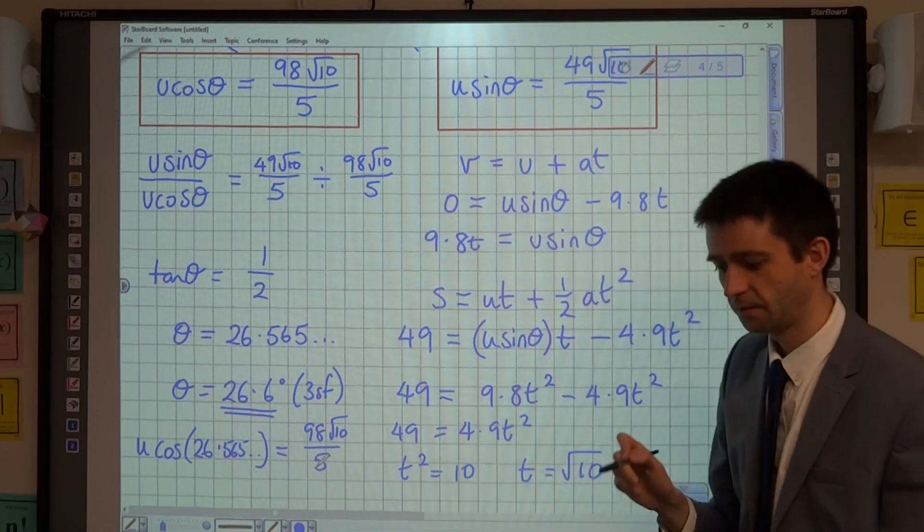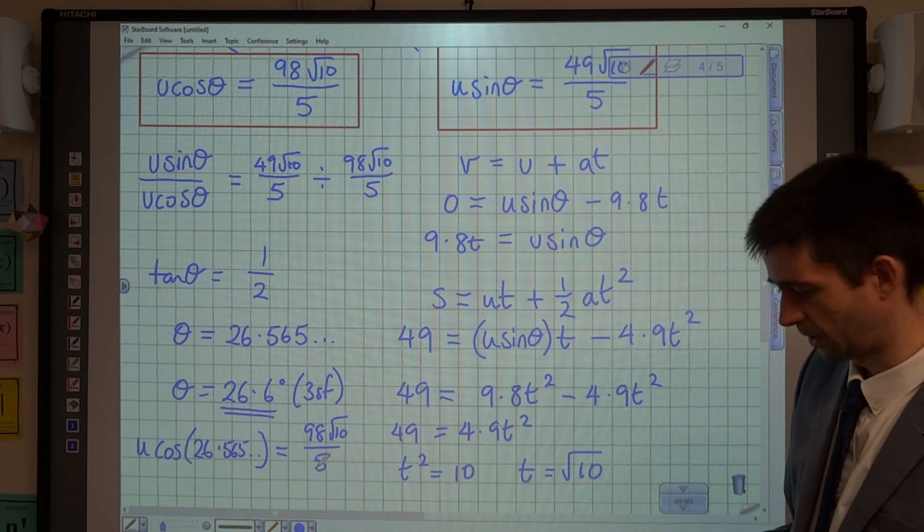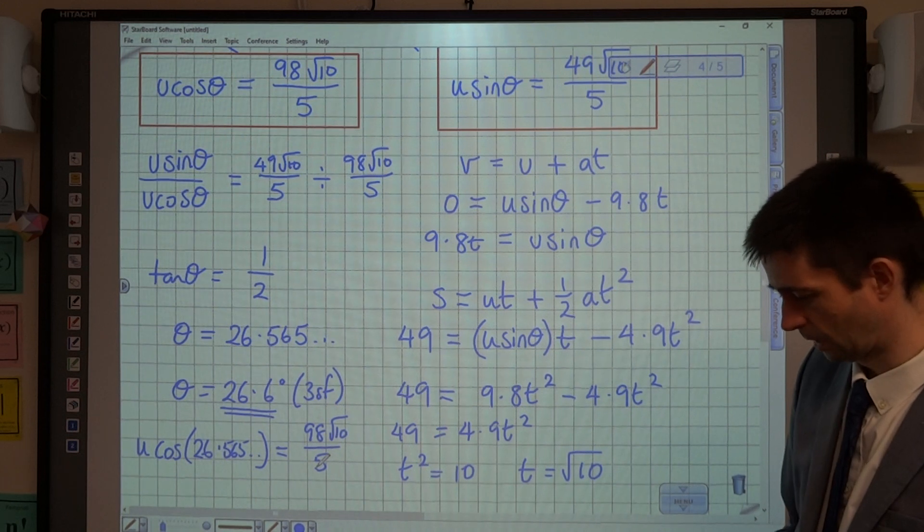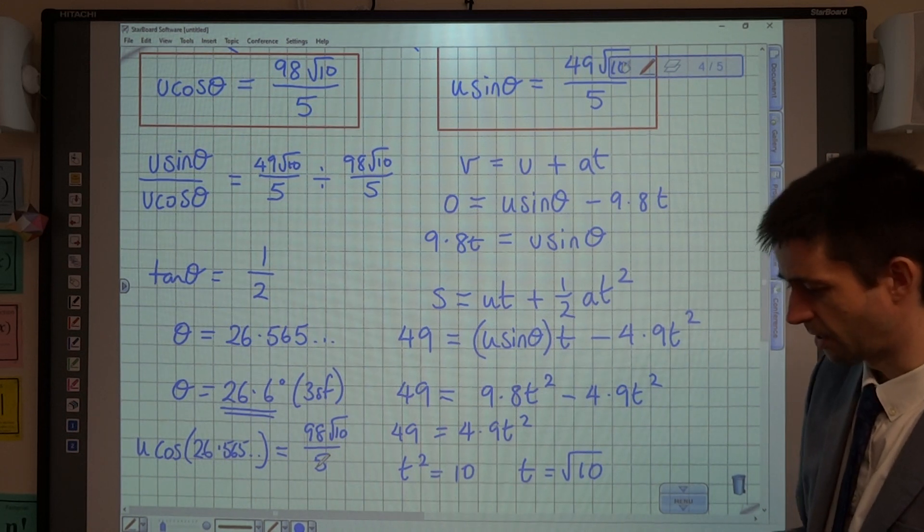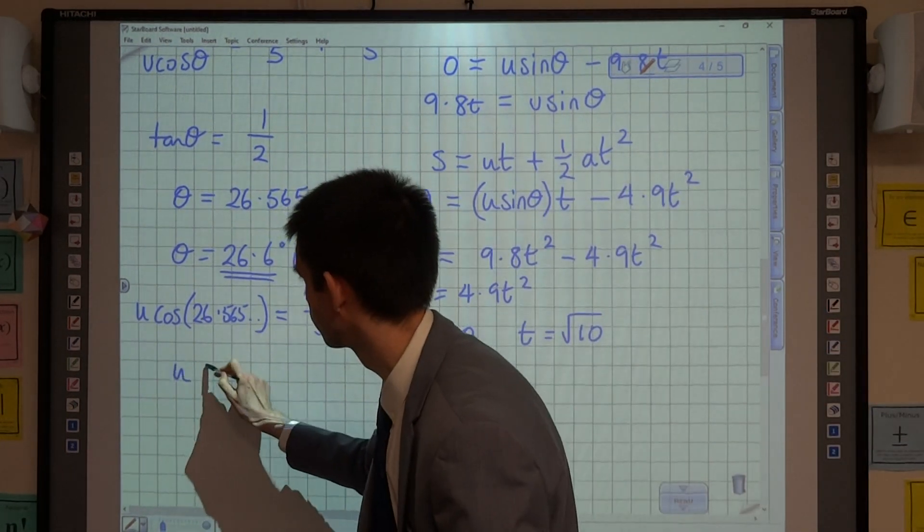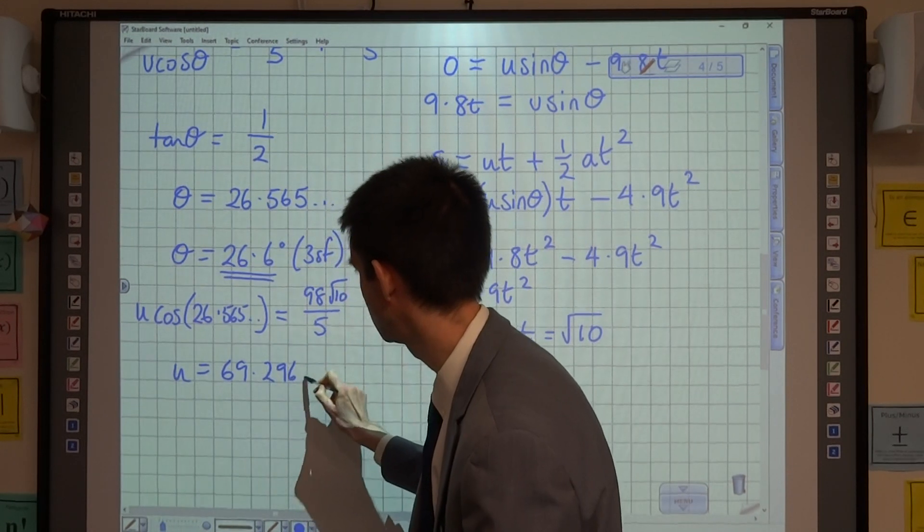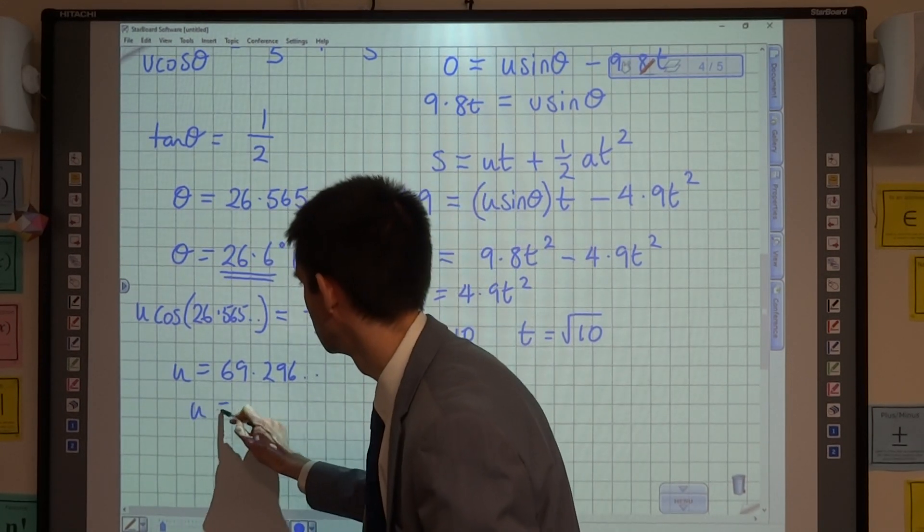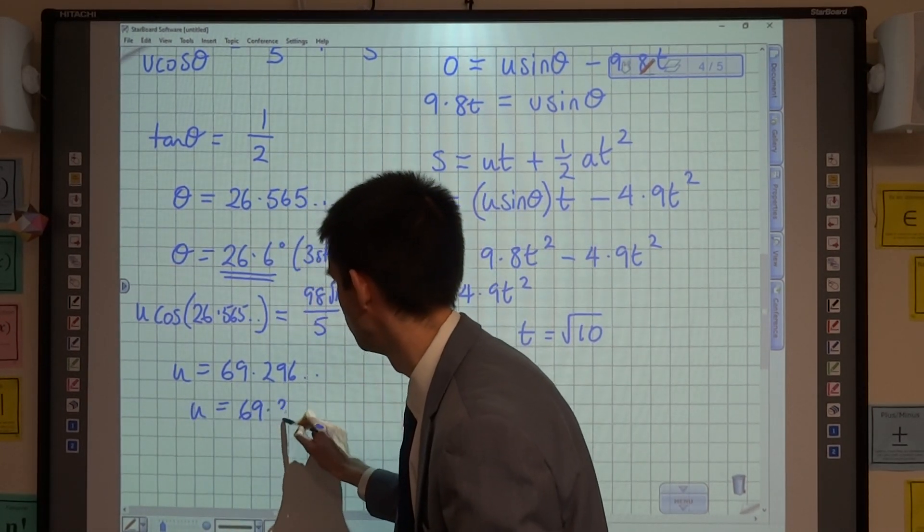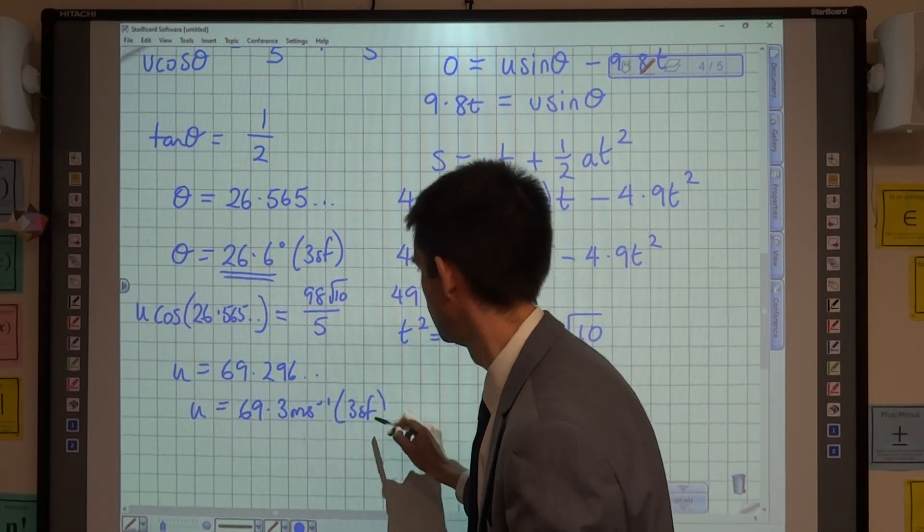I've got the value of theta in the calculator here, so I'm just going to cos that, and I'm going to do 98 root 10 over 5 divided by my answer to get that the value of u is 69.296. So 69.3 metres per second to 3 significant figures.